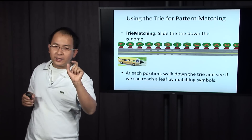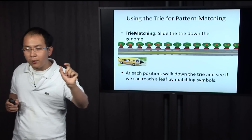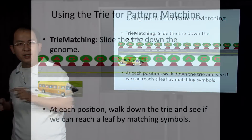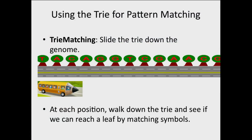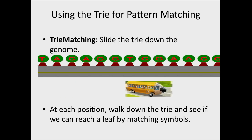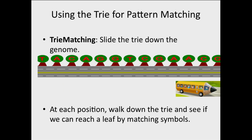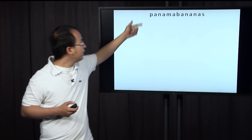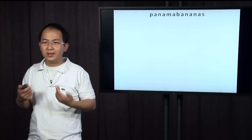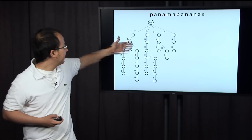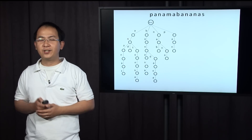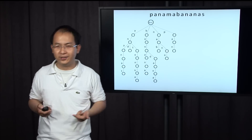Now we have already created a special structure called a trie that packs all the patterns into a single data structure. The only thing we have to do is move this data structure along the genome. Let's take an example. Here we have the string as the genome: Pandama Bananas. This is the trie constructed from the set of patterns we want to match.